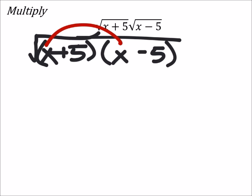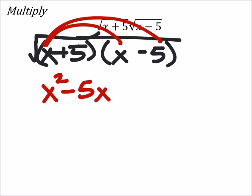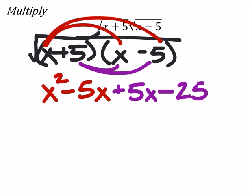I'm going to multiply the x's first, which would give me x squared. Then I'll take the x times that negative 5, which would be negative 5x. Now I'll multiply 5 times the x, which would be positive 5x. And 5 times negative 5 is negative 25. And of course, all this is still under the square root.